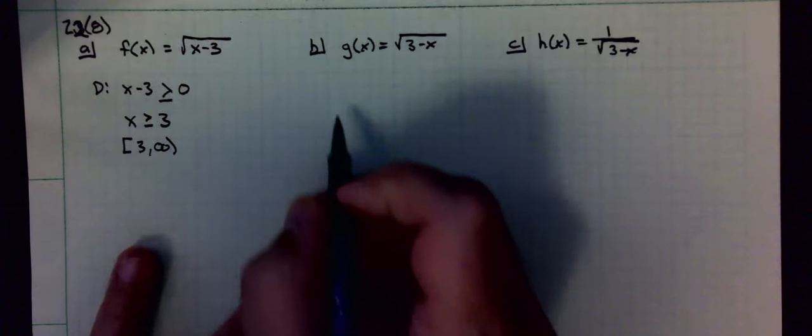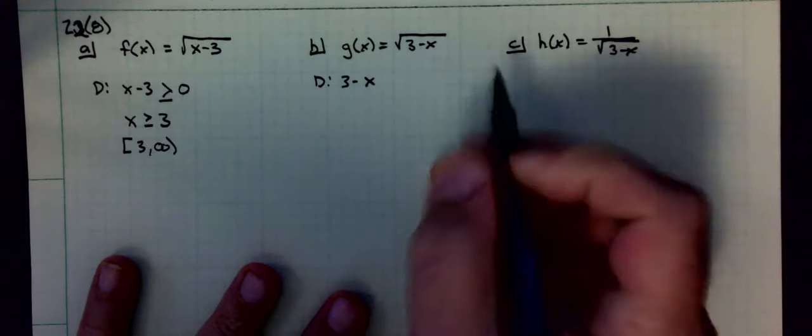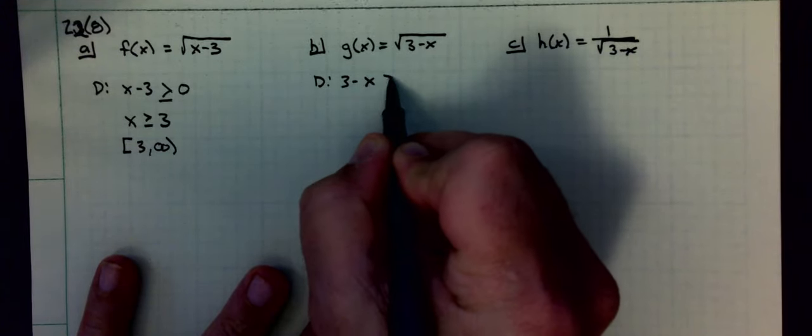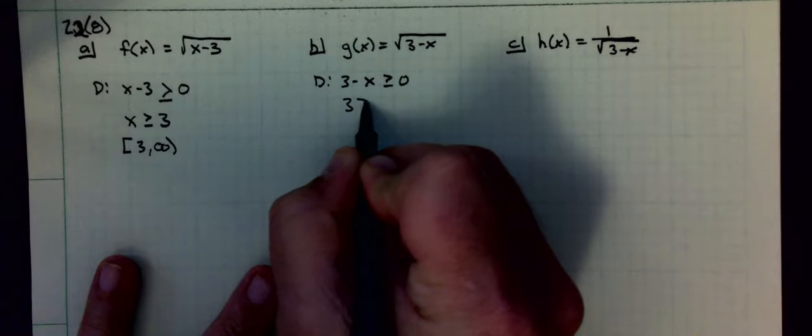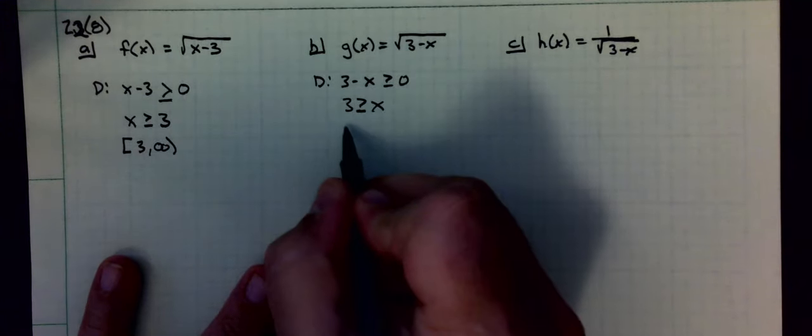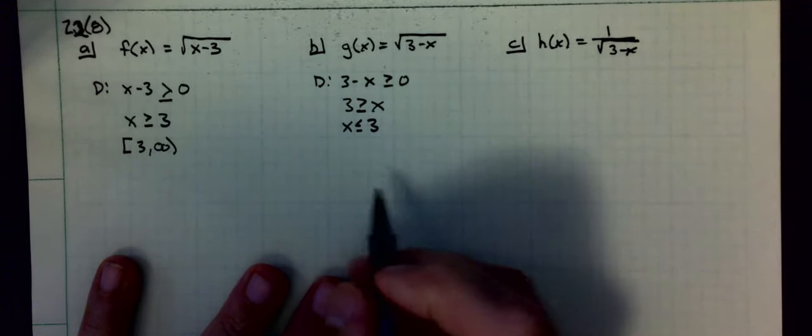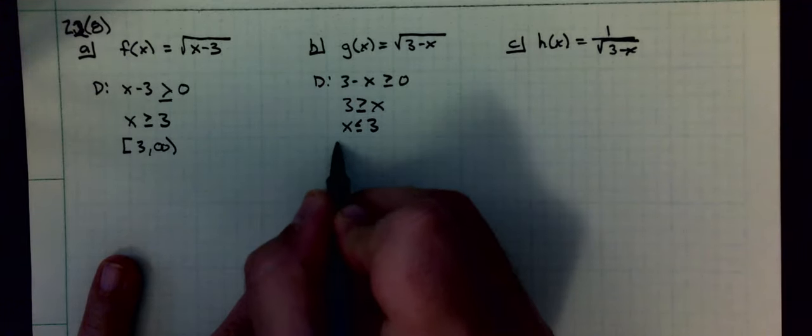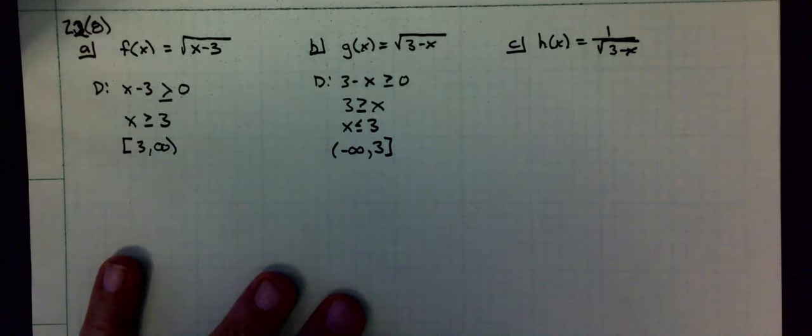I do the same work here. Three minus x has to be greater than or equal to zero. Add x to both sides, three has to be greater than or equal to x. Flip the whole thing around, x has to be less than or equal to three. In interval notation, that would be negative infinity to three.